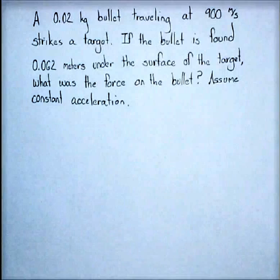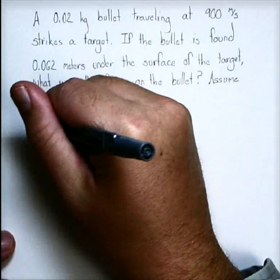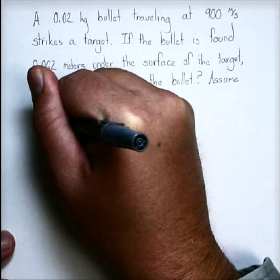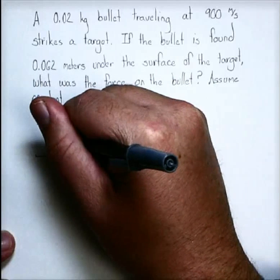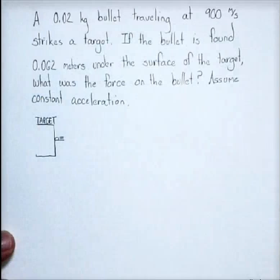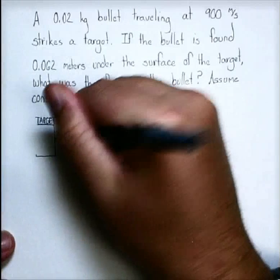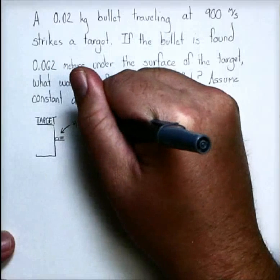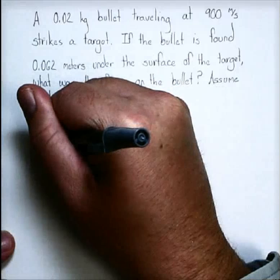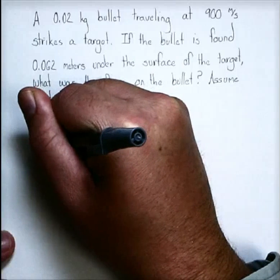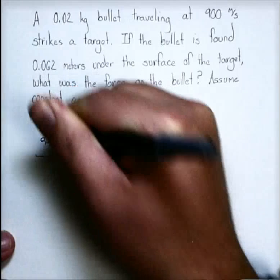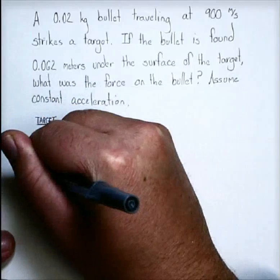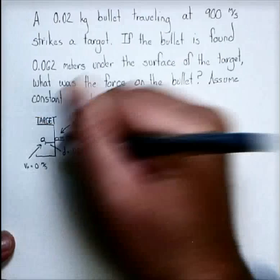So just like with any good problem-solving situation, it's not bad to have a diagram. So I'm going to draw that, and this is my target, and I have a bullet that starts here, and its speed at that point, let's call that our initial speed, because that's right before it hits the target, is 900 meters per second, and then it gets stuck inside the target afterwards, and the distance that it traveled in there is 0.062 meters, and we also know its final speed, how fast it ended up going, was 0 meters per second.